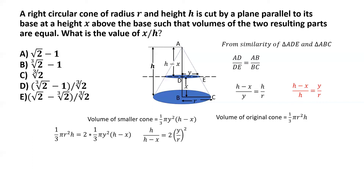Referring back to the red equation from the triangle similarity — y by r equals h minus x by h — we substitute: h divided by h minus x equals 2 multiplied by h minus x by h, whole squared. Taking all h and x terms to one side gives h cubed divided by h minus x whole cubed equals 2, so h divided by h minus x equals the cube root of 2.